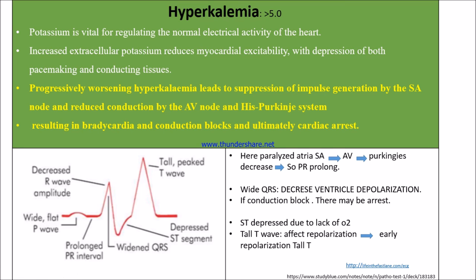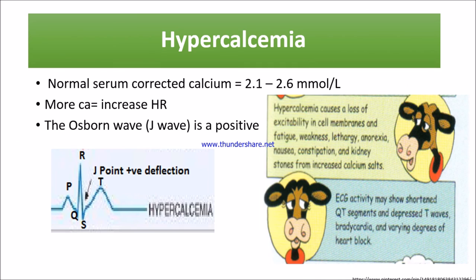Now let's see hypercalcemia. Normal serum corrected calcium is 2.1 to 2.6 mmol/L. Calcium is needed for contraction of the heart, so increased calcium increases heart rate. Hypercalcemia causes loss of excitability in the cell membrane, leading to symptoms of fatigue, weakness, nausea, constipation, lethargy, anorexia, and kidney stones.